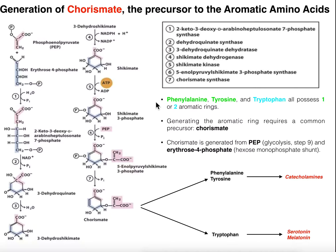Welcome back to Amino Acid Biosynthesis on Catalyst University. My name is Kevin Tokoff. In this video we're going to discuss the biosynthesis of a molecule called Charismate. It turns out that Charismate is going to be the precursor to all three aromatic amino acids, which are going to include phenylalanine, tyrosine, and tryptophan.